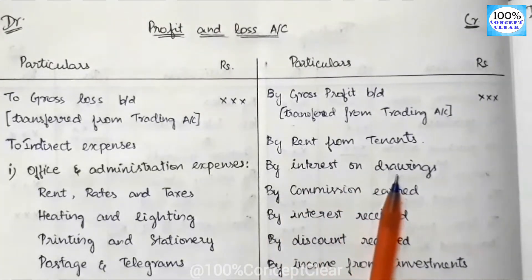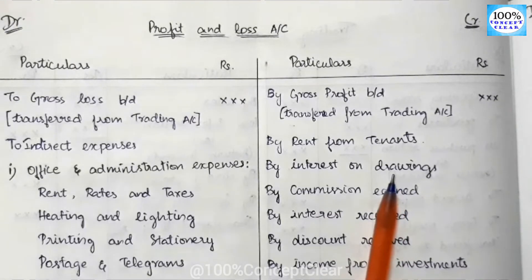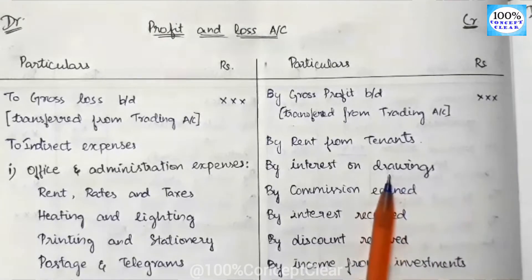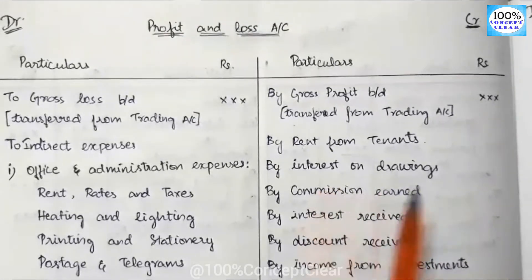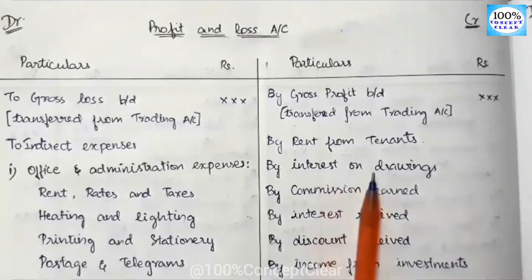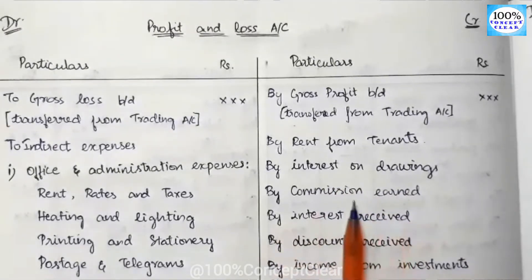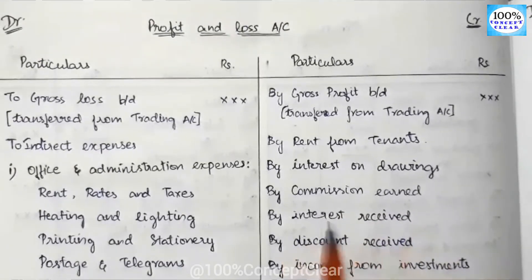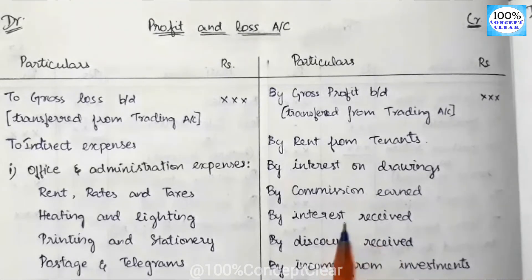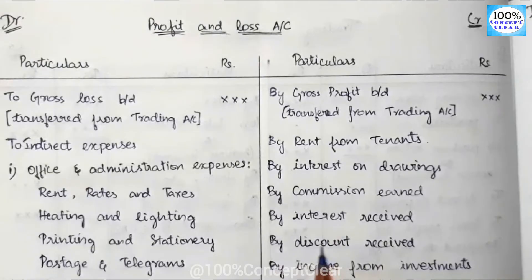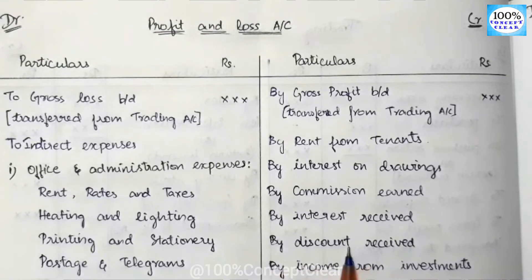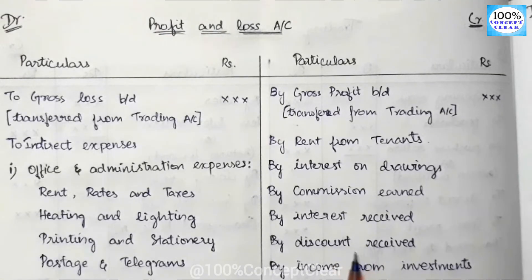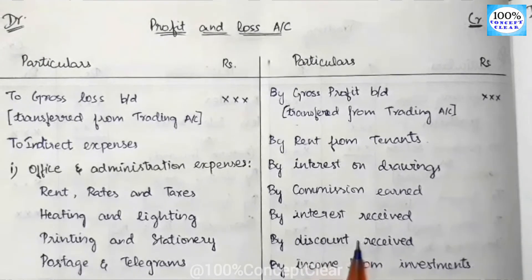Next on the credit side: interest on drawings — this is when capital is used for personal use and interest is charged on the drawings amount, which becomes business income. Then commission earned — if we act as an agent we earn a commission. Interest received — if we have investments or loans given out, we receive interest.